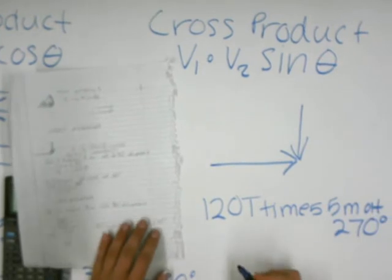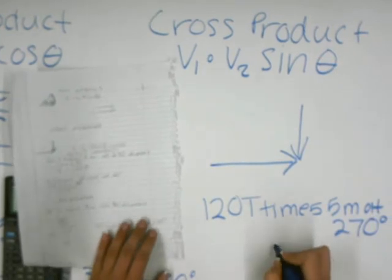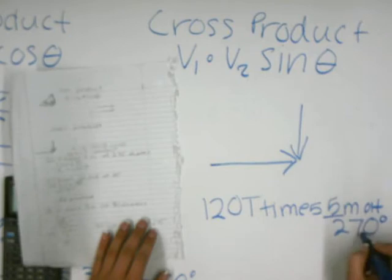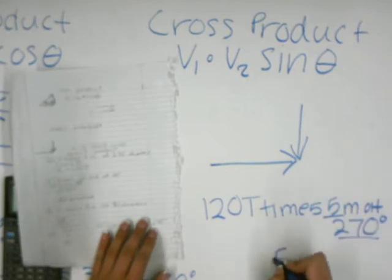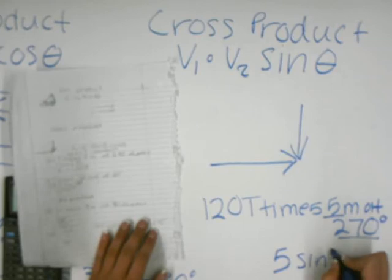this is the second best vector, and that's the degree, so 5 sine 270. Just negative 5, so then that times 120T. Woohoo!